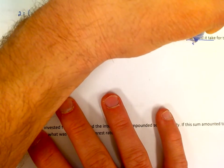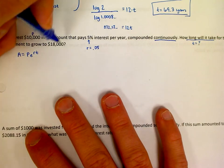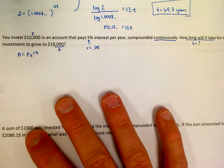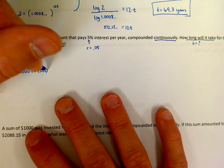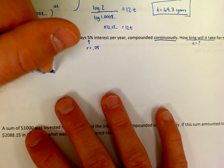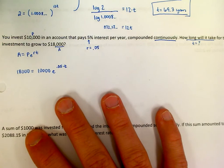How long will it take means we're solving for time again, we're solving for the t in this equation for the investment to grow to $18,000. So there's our final amount, $18,000. So let's plug it all in. 18,000 is our final amount, our starting amount is 10,000, we're going to raise it to e to the 0.05 times t.